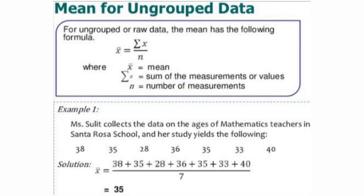Mean for ungrouped data: for ungrouped or raw data, mean = sum of observations divided by total number of observations, represented as x̄ = Σx / n. Example: Miss Sulit collected data on the ages of mathematics teachers — the data values are 38, 35, 28, 36, 35, 33, 40. There are 7 observations, so the sum divided by 7 gives a mean of 35.